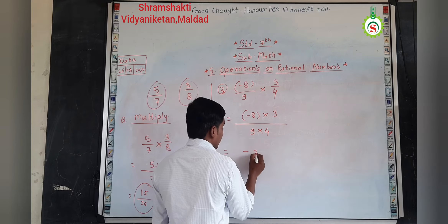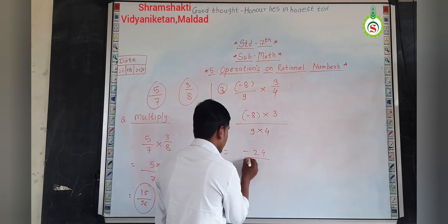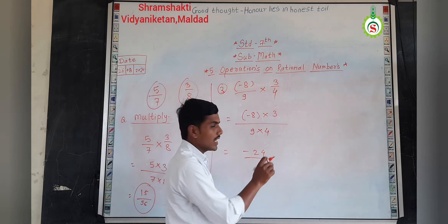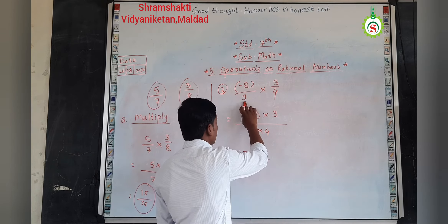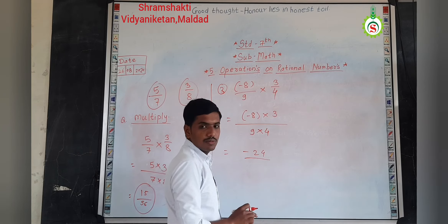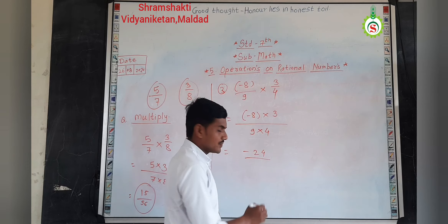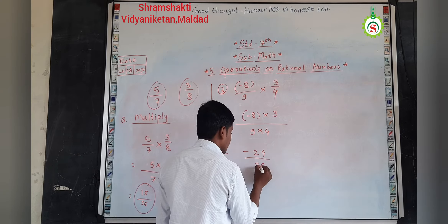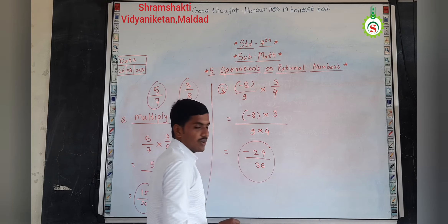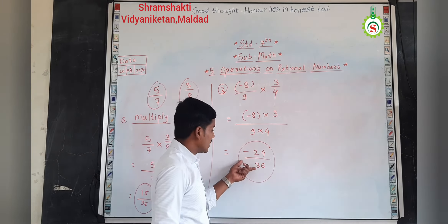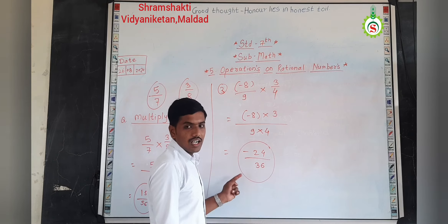At the denominator, what I have to take? Product of denominator. First denominator is nine, second one is four. So, I have to take product of nine and four. So, nine fours are thirty-six. So, what will be the answer of our multiplication? That is minus twenty-four by thirty-six is the answer.